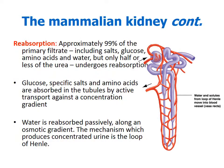The second process is reabsorption. Most of the filtrate is reabsorbed — salt, glucose, amino acids, and water are all reabsorbed, along with half or less of the urea. We need to reabsorb glucose to function, amino acids, and salts for nervous system function. Glucose is reabsorbed by active transport against the concentration gradient, and water moves through the osmotic gradient to be reabsorbed through the loop of Henle.